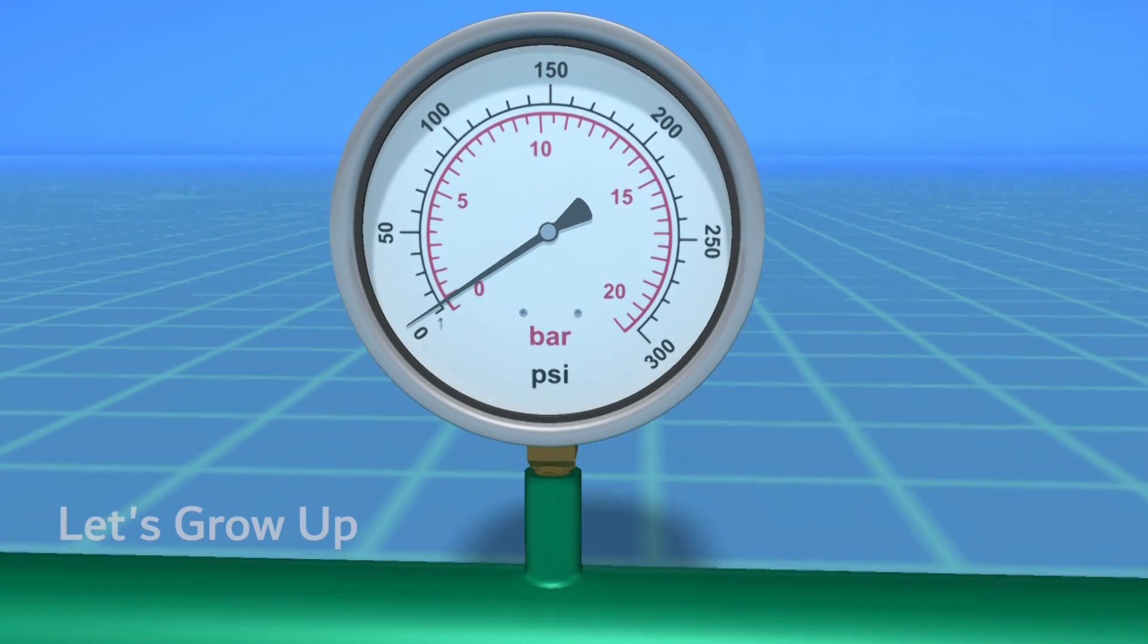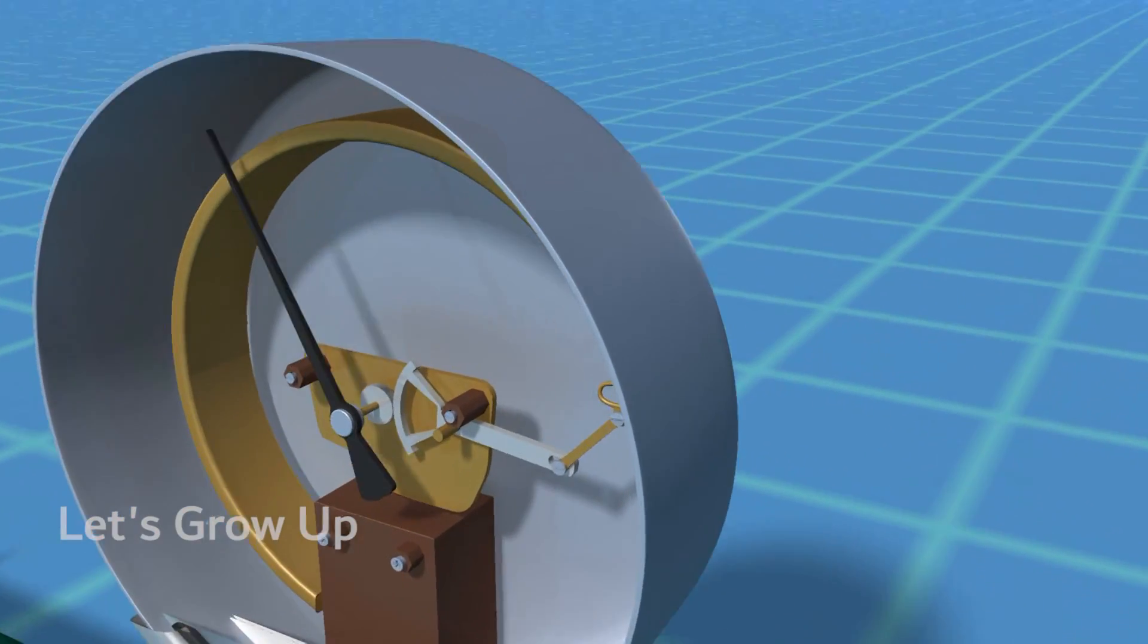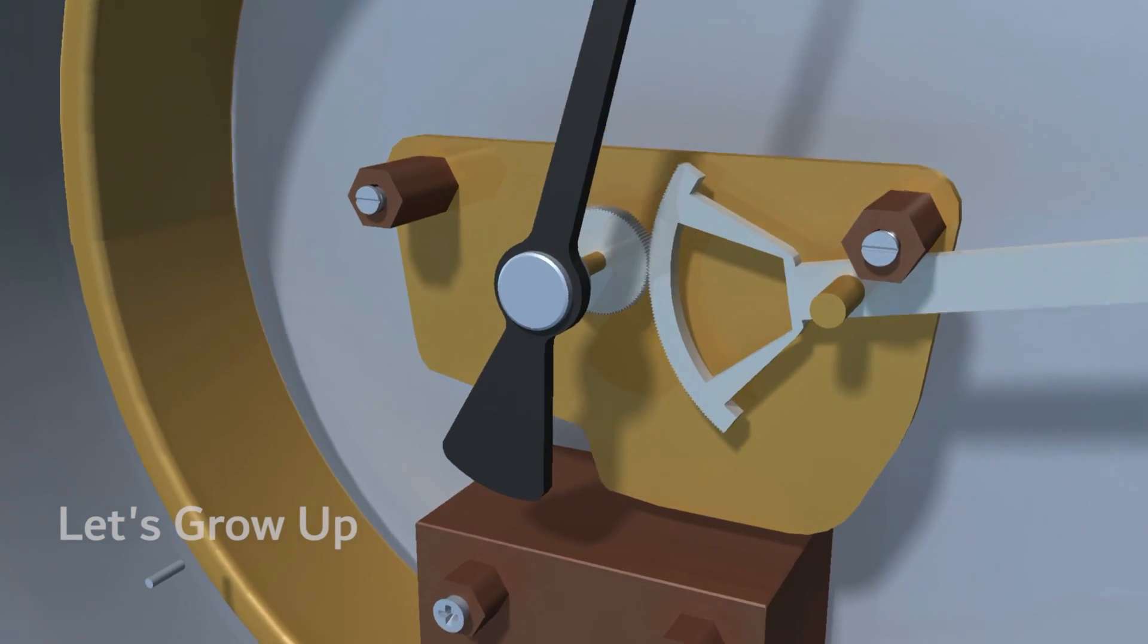There are various types of pressure gauges, but they generally operate on the principle of mechanical deformation caused by the pressure being measured.